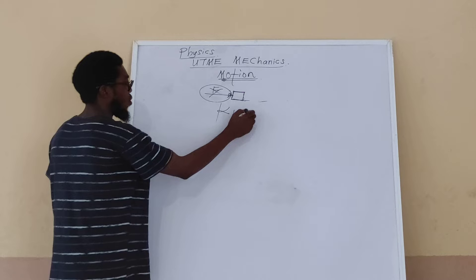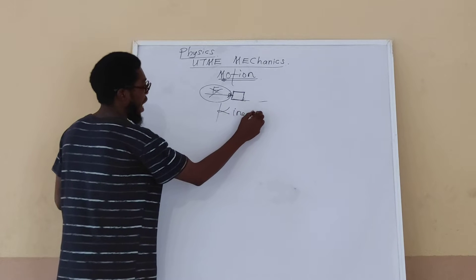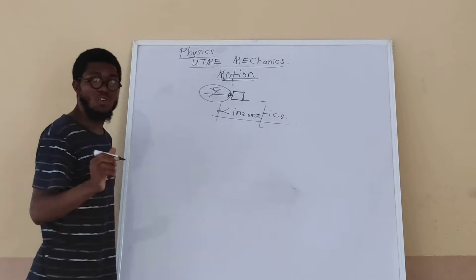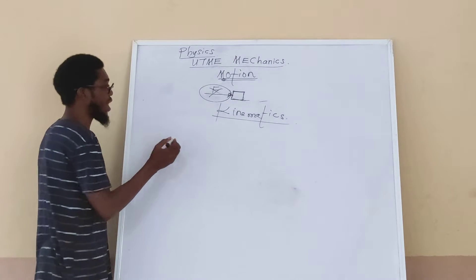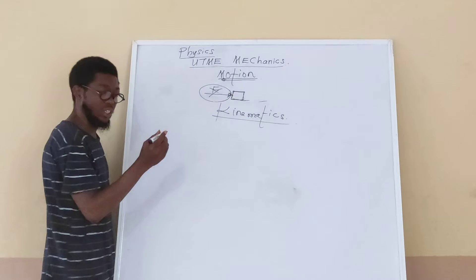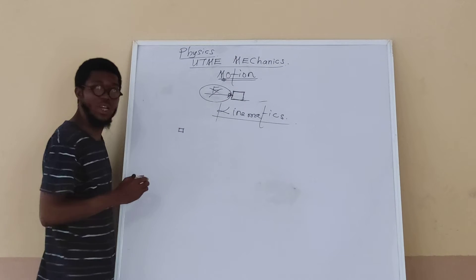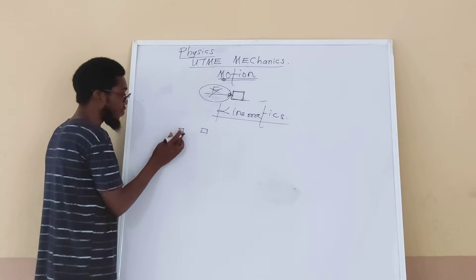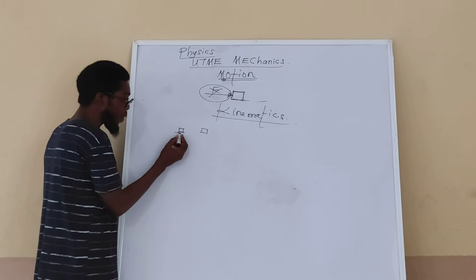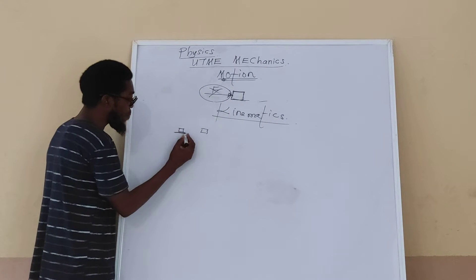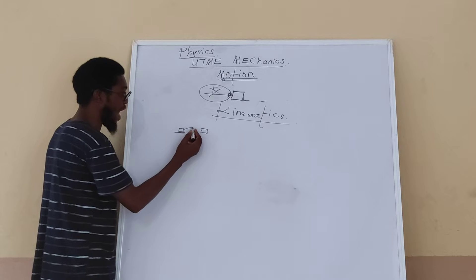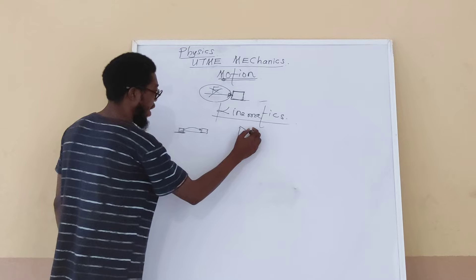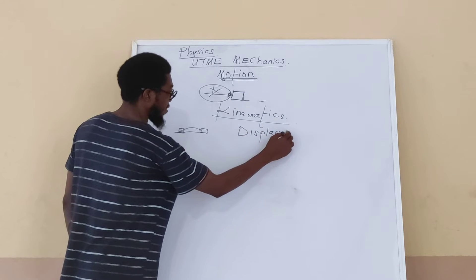In this part of the work for UTME, I am going to be describing the motion of an object without considering the force that brings about the motion. I will call this aspect of motion kinematics. In this motion we make use of certain parameters. The first parameter: before an object moves, it must go away from its original place — we say the object has been displaced.